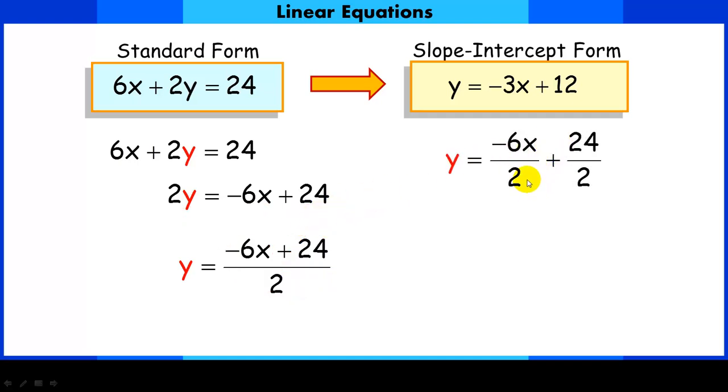So it will look something like this. Now in each term we would just simplify. Negative 6 over 2, well, that would just be a negative 3. 24 over 2, well, of course, that's just 12.